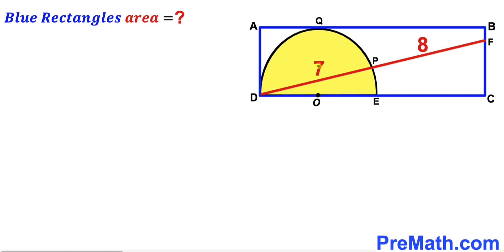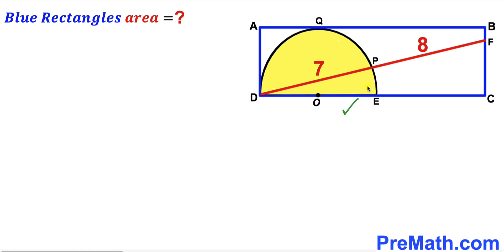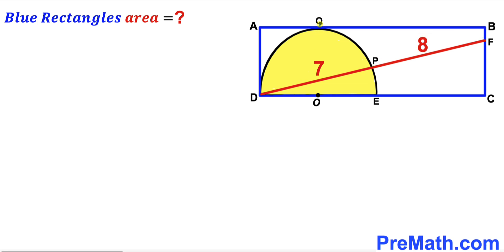Welcome to PreMath. In this video we have a yellow shaded semicircle with center O, along with a secant line DF, fully confined in a blue rectangle ABCD. Segment DP is seven units, segment PF is eight units, Q is the point of tangency, and DE is the diameter of the semicircle. Our task is to calculate the area of this blue rectangle.